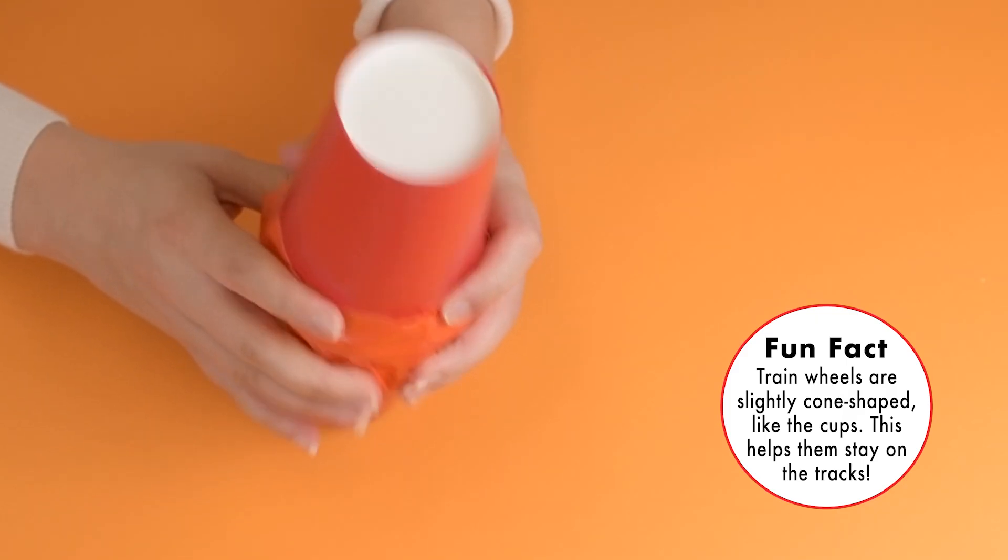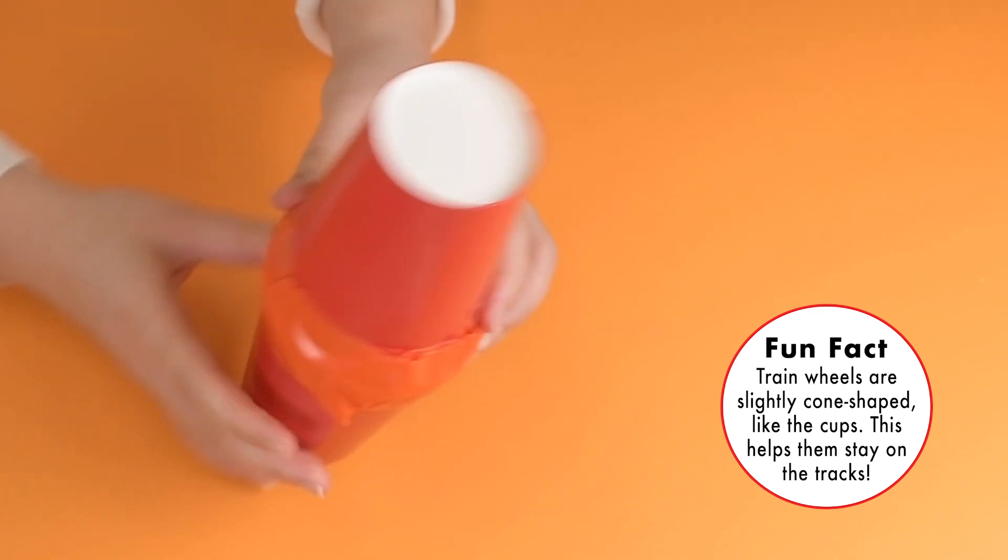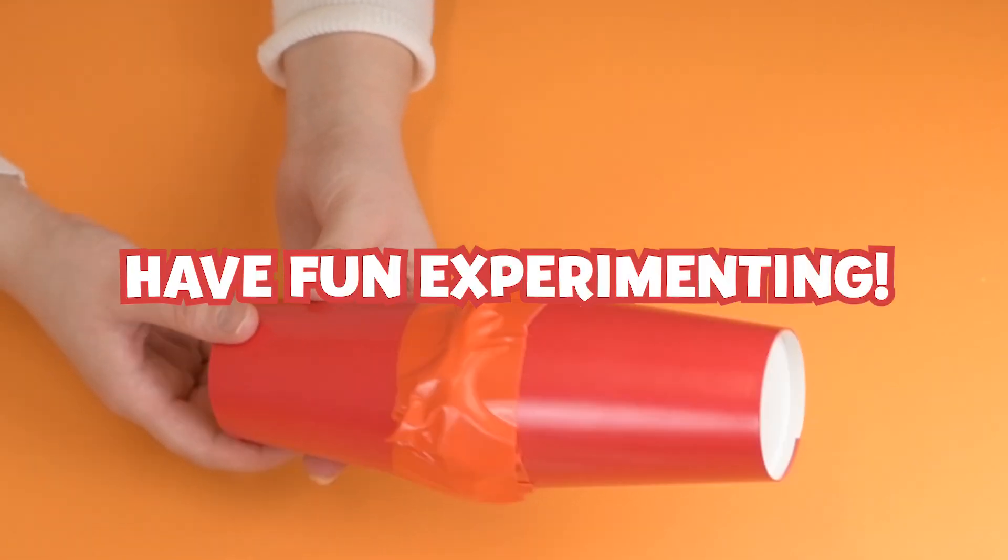Fun Fact! Train wheels are slightly cone-shaped, like the cups. This helps them stay on the tracks. Have fun experimenting!